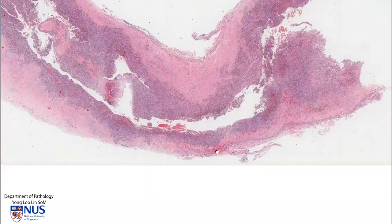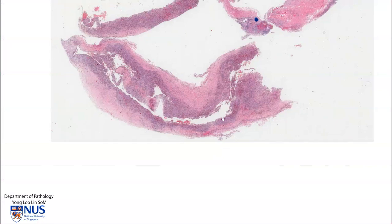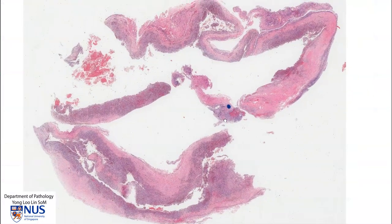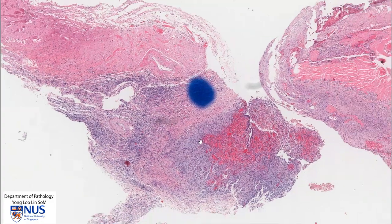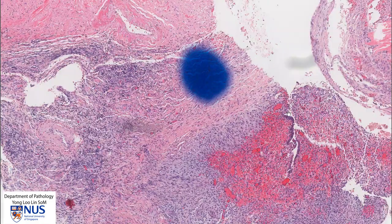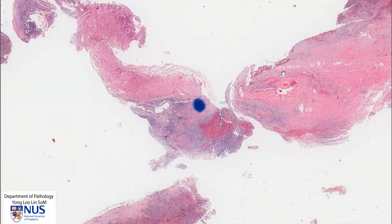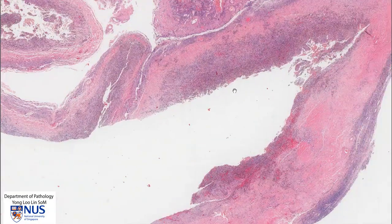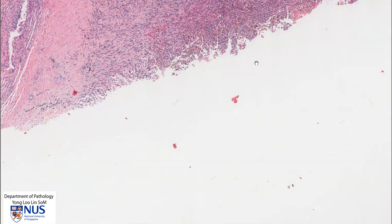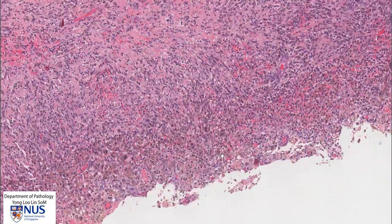In summary, this is an endometriotic cyst of the ovary. We have a small residual focus of intact endometrial columnar cell lining with endometrial stroma. But in most areas, there is denudation of the cyst wall and replacement by sheets of hemosiderophages.